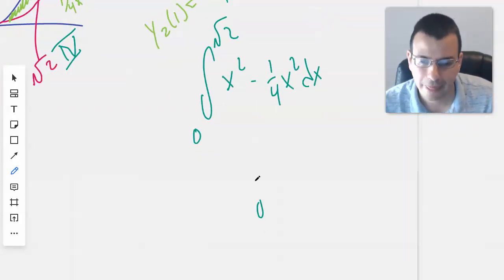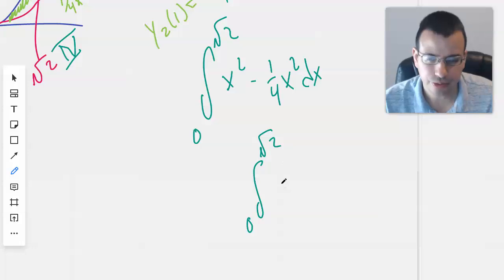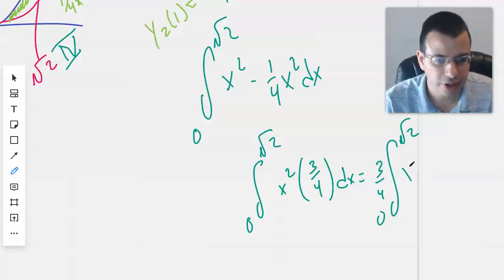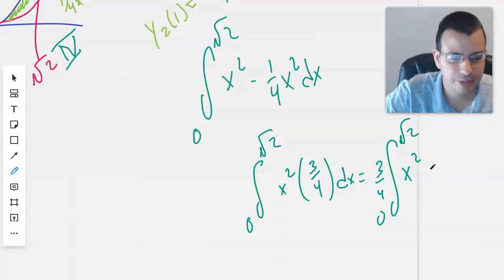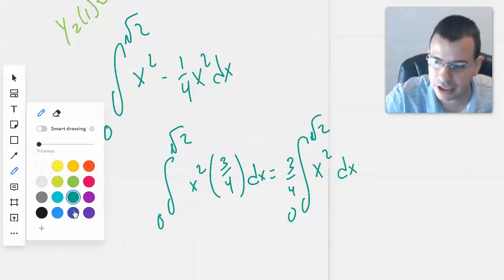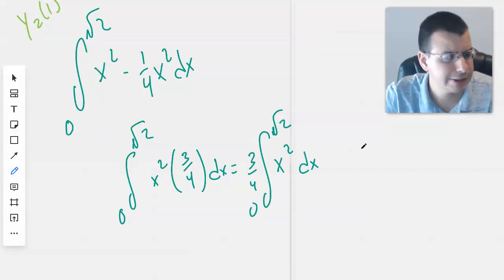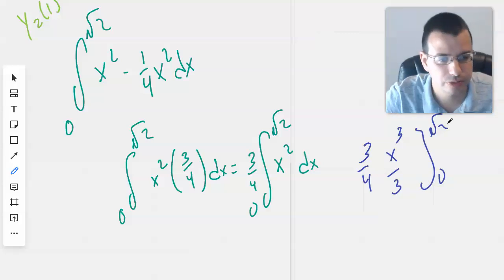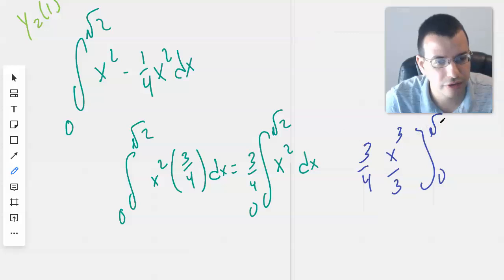So we have zero to square root of two. We'll factor out an x squared and we get three fourths. One minus one fourth is three fourths, dx. Bring that to the outside. Zero to square root of two, x squared. I know I could have done the integral of each of them, but I think it's easier to do it this way. Fewer opportunities for mistakes. And let's do three fourths x cubed over three, evaluate it from zero to square root of two.